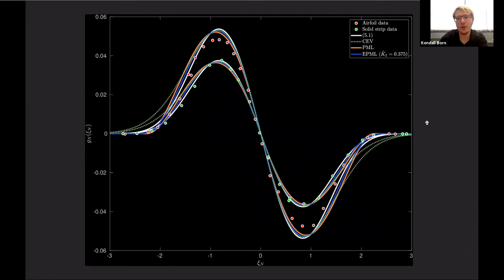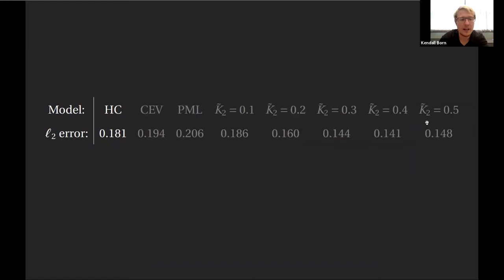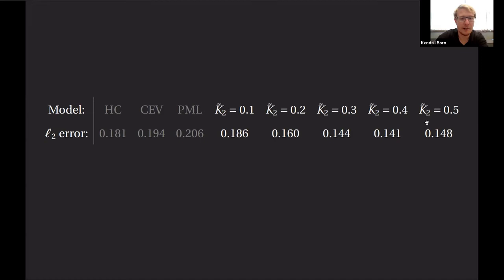Here's a summary table. The heuristic curve has an associated error. The constant eddy viscosity model doesn't really improve on the heuristic curve. Prandtl's mixing length, surprisingly, is even worse in this case. The extended Prandtl mixing length on average performs much better than the other two models and the heuristic curve. The best value was K2 equal to 0.375.